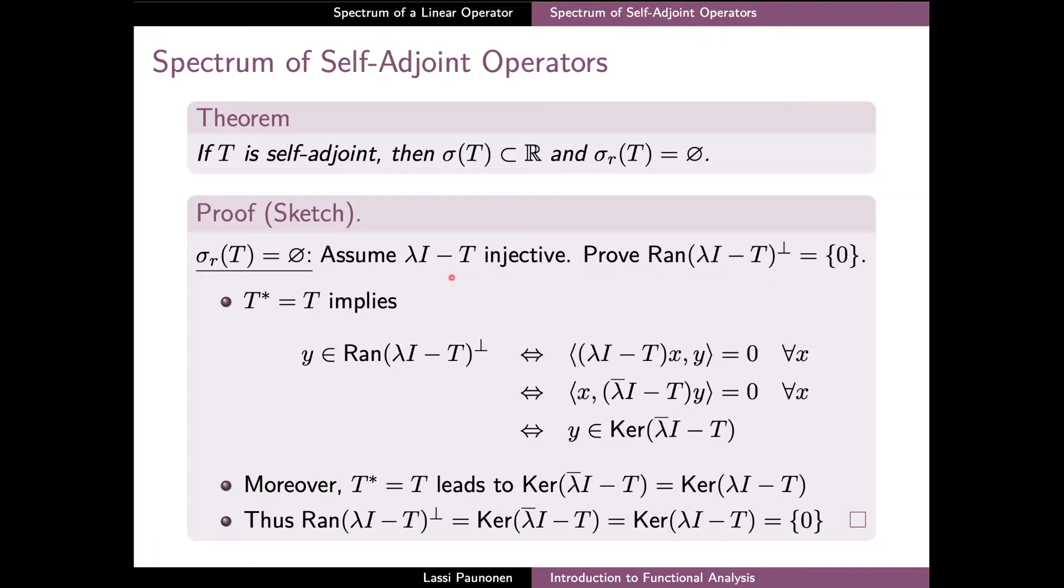To this end, we assume that λI − T is injective and take an arbitrary Y from the complement of the range. By definition, Y is orthogonal with respect to any elements from the range of λI − T. We can now use the self-adjointness of T to move the operator to the second component of the inner product, introducing a complex conjugate to the scalar λ.